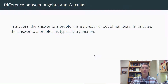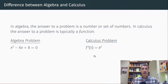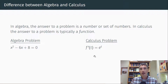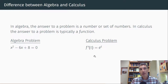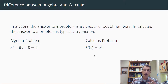I want to talk about the difference between algebra and calculus first. In algebra, the answer to a problem is usually a number or a set of numbers, whereas in calculus the answer is typically a function. An algebra problem might look like x squared minus 6x plus 8 equals 0, and an answer might be the number 2 — since 4 minus 12 plus 8 equals 0. A calculus problem might ask something like f prime of t equals e to the t, and the answer is a function: f of t equals e to the t plus C.